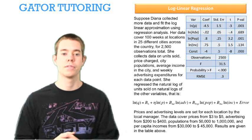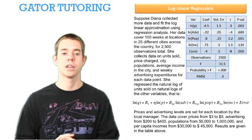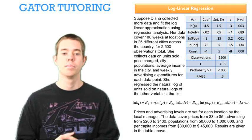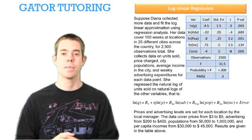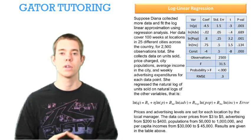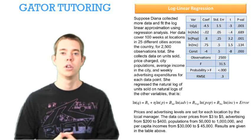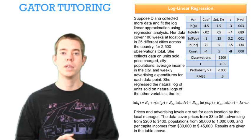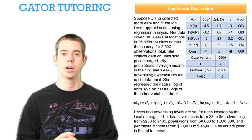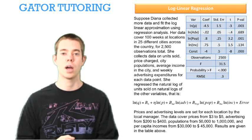This last paragraph talks about the data covering prices from $3 to $5, advertising from $200 to $400, populations from $50,000 to $1,000,000, and per capita incomes from $30,000 to $45,000. What's important about that is we can't extrapolate out of range. So given any price, let's say of $8, we wouldn't be able to do a reasonable estimation because our data only cover prices from $3 to $5. So it's very important not to extrapolate out of range.